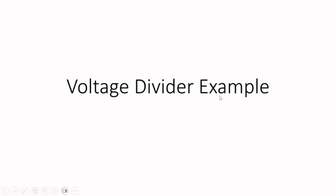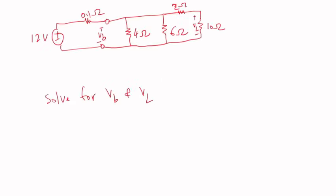In this video I'll go through a simple voltage divider example. We have a simple circuit from a textbook with a 12-volt battery in series with a resistor of 0.1 ohms. This is the internal resistance of the source. Then these are the terminals of the battery, followed by multiple resistors. We want to know what the voltage is at the terminal of this source and also the voltage at this 10-ohm resistor.